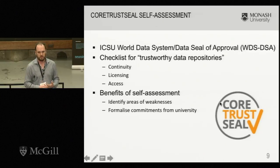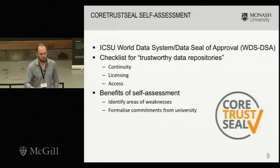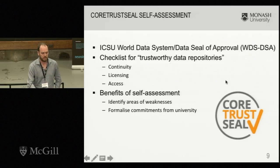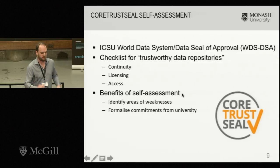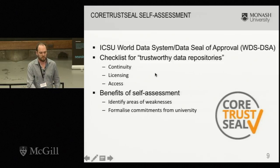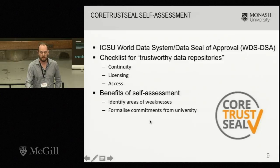Once we set up this documentation — just the bare bones to start — we hope it matures into something more useful over time. Each node did a self-assessment against the CoreTrustSeal certification, set up by the World Data System and the Data Seal of Approval organisations. It's basically a checklist of about 10 to 12 points to see how your data repository matches up with this certification, which is based on the FAIR principles. It's a good process to explicitly find out where the weaknesses in your repository may be, and to formalise commitments and guarantees around data access.